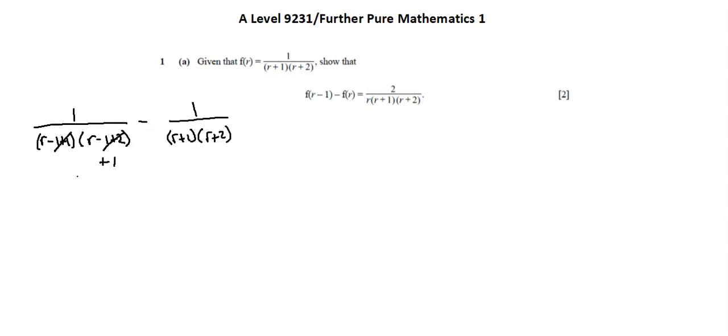To subtract the fractions, I want to create common denominators. Notice that we have the shared term r plus 1 in both fractions. I'll multiply on the left by r plus 2, so we have 1 times r plus 2, and on the right, minus 1, we're going to multiply by r, 1 times r.